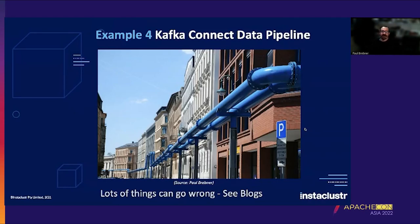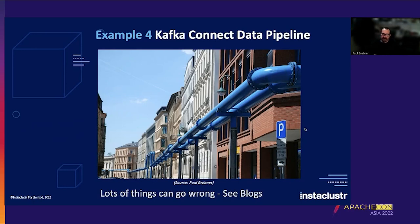In the abstract I promised a fourth example: a Kafka Connect data pipeline I've been presenting at conferences over the past year. It involves several systems connected together with open source and publicly available title data — an IoT use case with visualization options. Lots of things can go wrong beyond performance and scalability, including reliability, and they interact in interesting ways. Check my blogs — the URL is on the next slide — for the pipeline series with insights into scalability of Kafka Connect data pipeline systems.